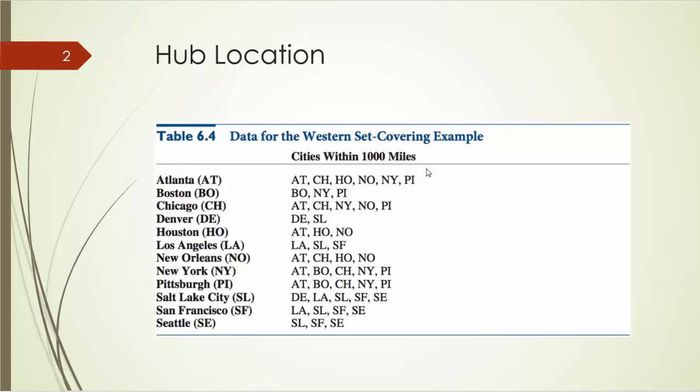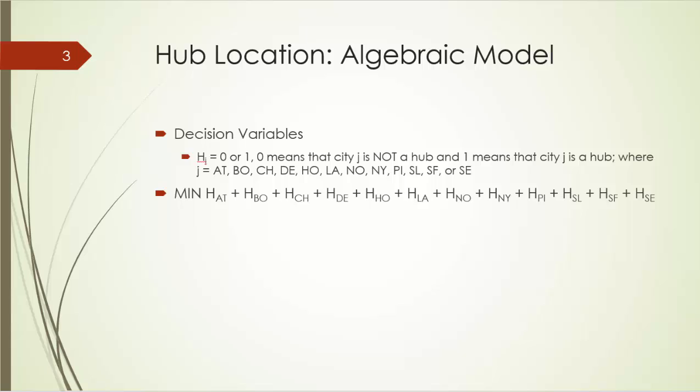Next, we are going to formulate an algebraic model for this problem. Let's define our decision variables first. Let hj be either 0 or 1. 0 means that city j is not a hub, and 1 means that city j is indeed a hub, where j can be Atlanta, Boston, all the way to Seattle.